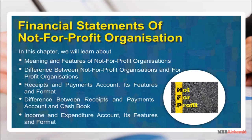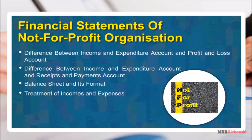In this chapter, we will learn about the meaning and features of not-for-profit organizations, the difference between not-for-profit organizations and for-profit organizations, receipts and payments account — its features and format — difference between receipts and payments account and cash book, income and expenditure account — its features and format — difference between income and expenditure account and profit and loss account, difference between income and expenditure account and receipts and payments account, and balance sheet and its format.